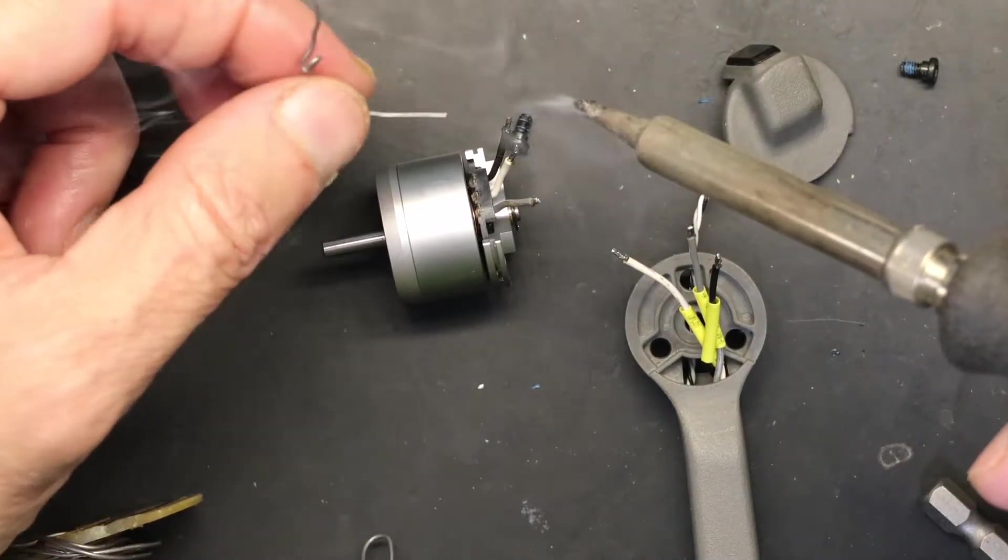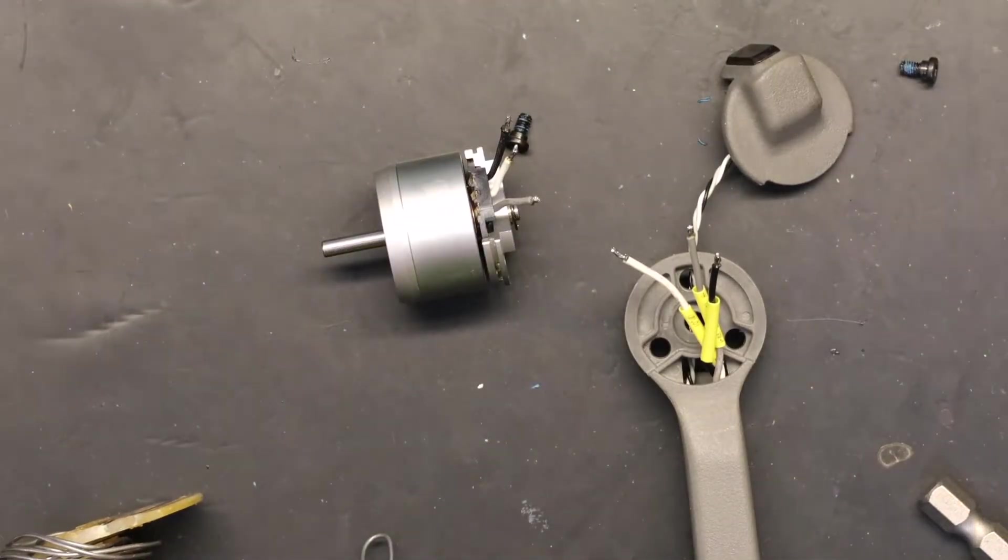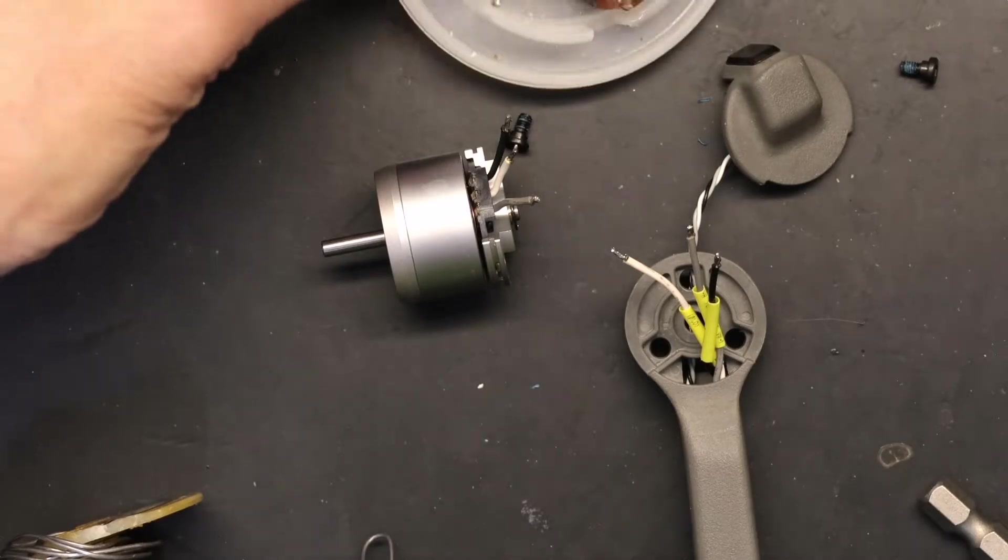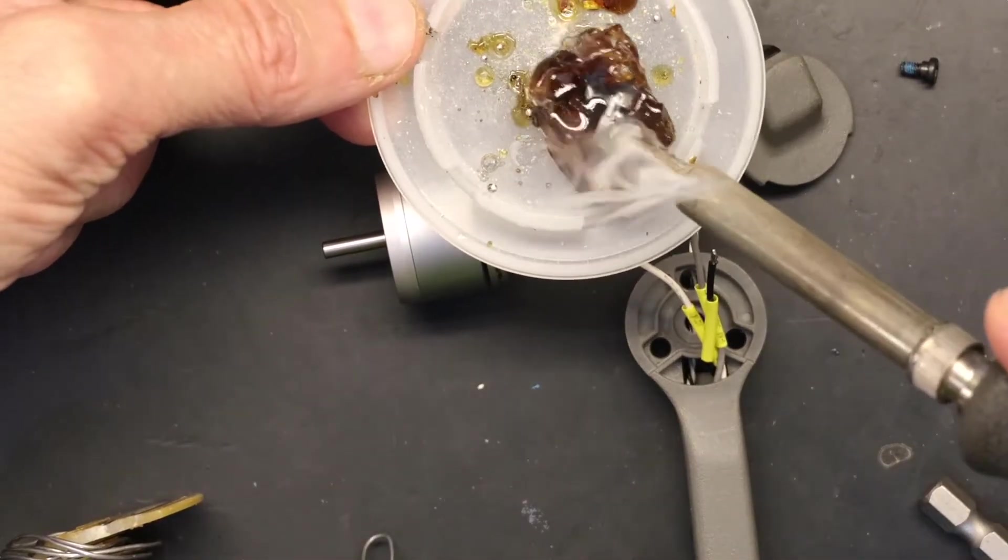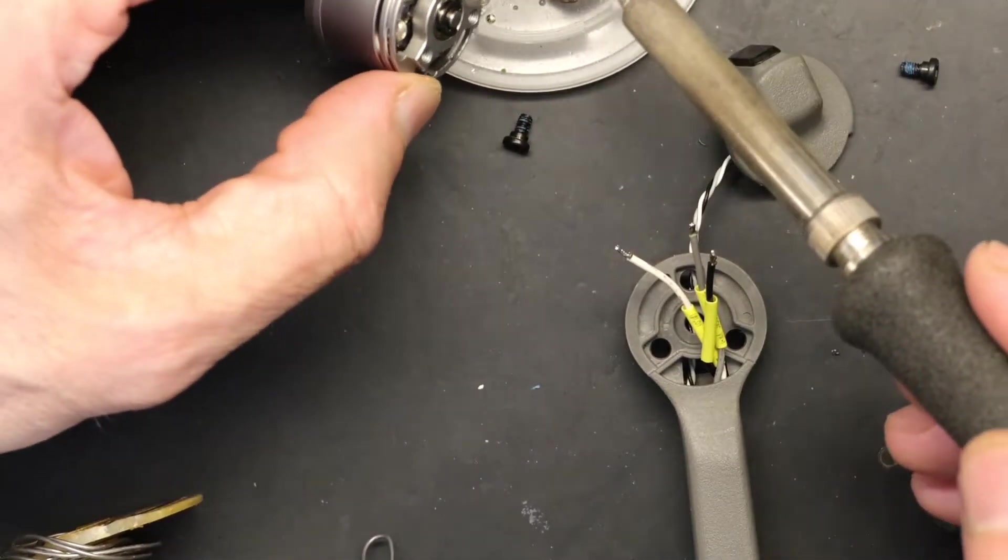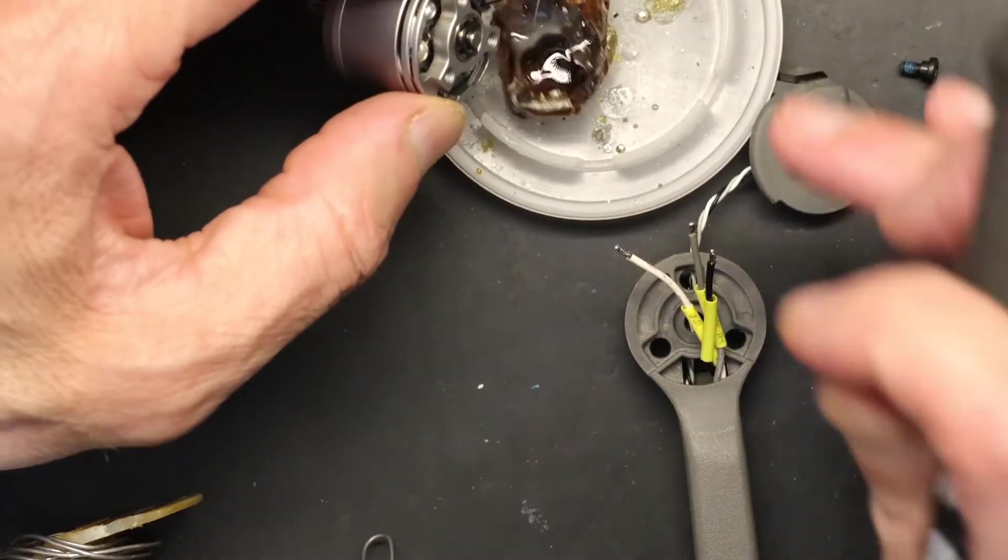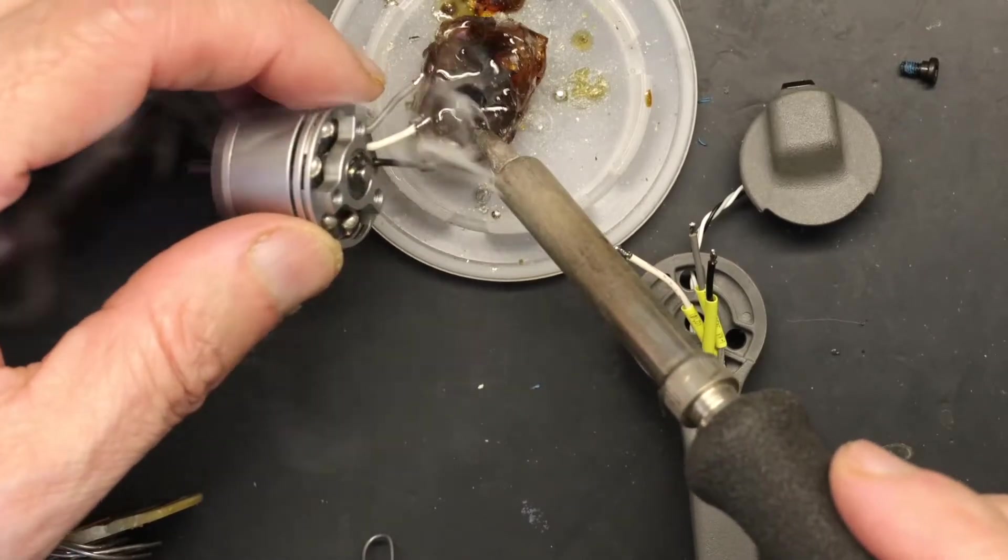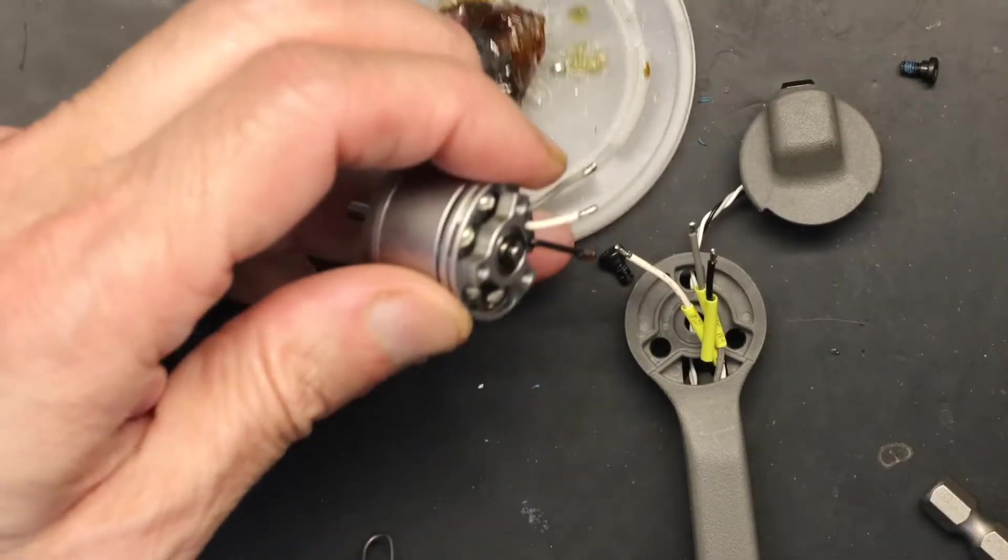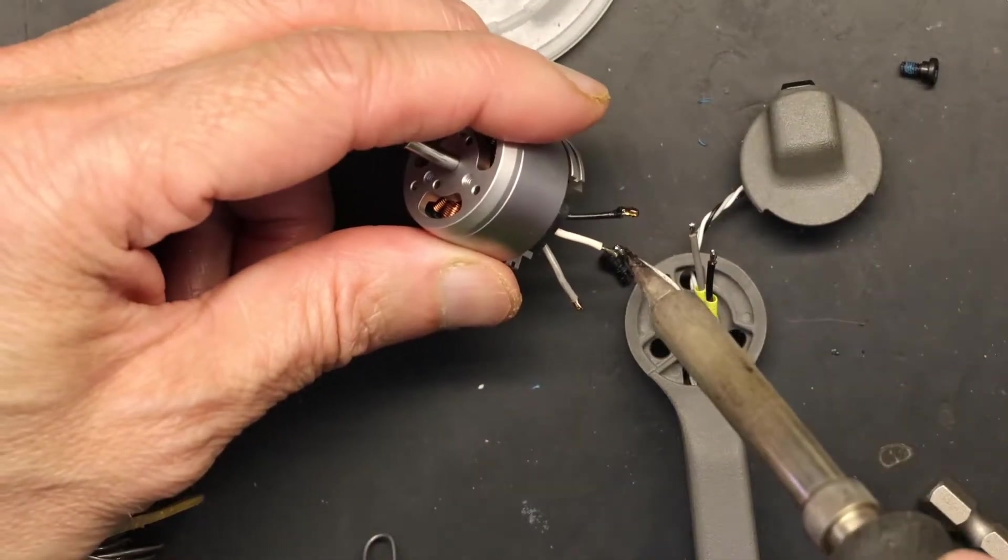I believe my soldering iron is way too hot, let me lower the temperature. Rosin comes in handy, or soldering paste or rosin, whatever you want to call it. You can use soldering paste. I need that in order to get a decent solder joint. I don't want to get cold solder joints. It's a no-brainer that each color goes to its corresponding color.